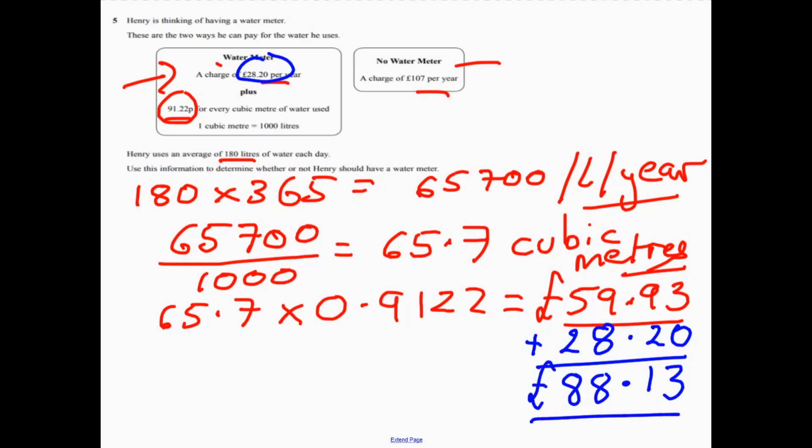Now, which is best? We've got this one. That's the water metre. And this is no water metre. So use the information to determine whether or not Henry should have a water metre. Well, it depends if you want to pay less or not. So we can say 88.13 is less than 107. So based on that information, yes, water metre please.